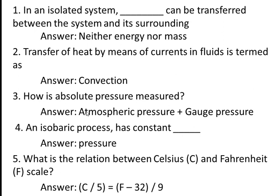Third question: how is absolute pressure measured? Absolute pressure is equal to atmospheric pressure plus gauge pressure. Atmospheric pressure is the pressure under which we are living, and we measure all pressures with respect to atmospheric pressure. If the pressure is more than atmospheric pressure, we call it gauge pressure. If the gauge pressure is negative, we call it vacuum pressure, and absolute pressure equals atmospheric pressure minus vacuum pressure.